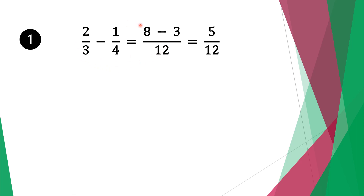Four times two is eight. We move along the minus sign. Do the same thing for the second fraction: twelve divided by four is three, three times one is three. Eight minus three is five, so our solution is five over twelve.